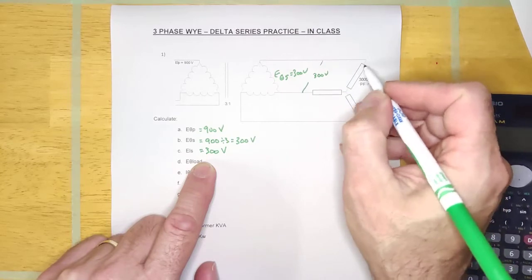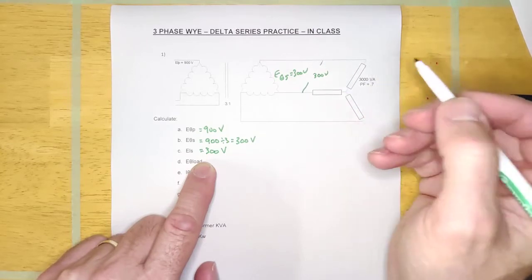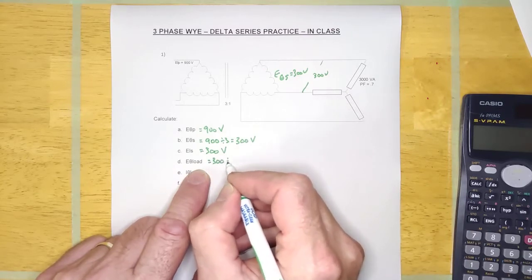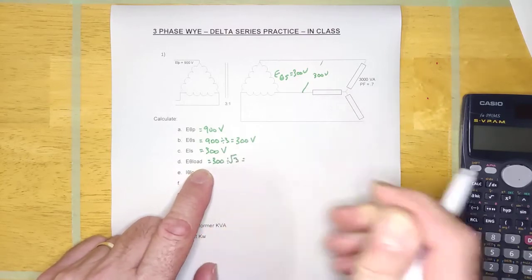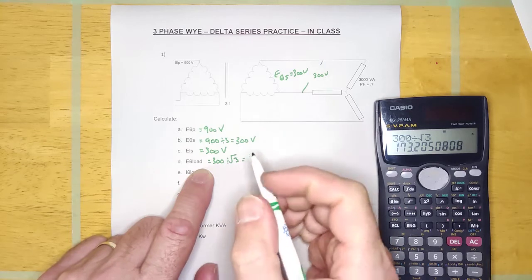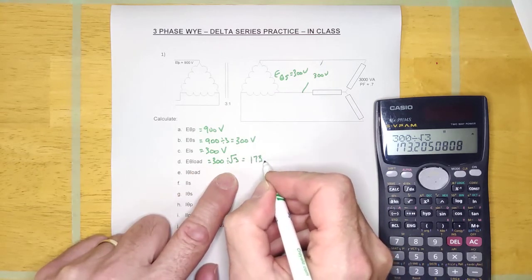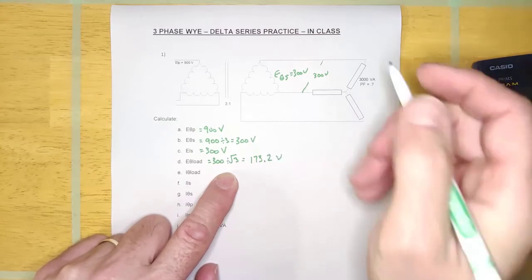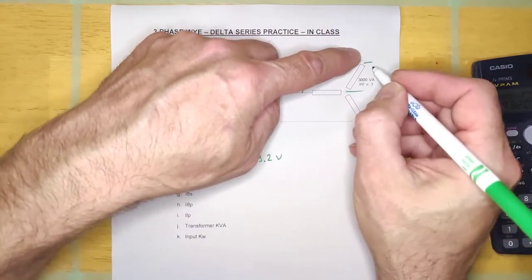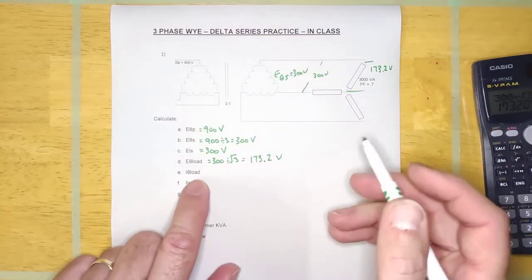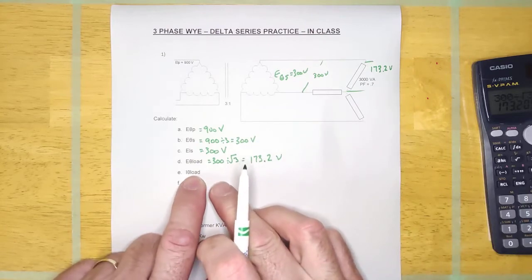Since the load is Y-connected, the question is: what is the voltage across one of these loads? It's going to split that 300 volts, so E-phase load equals 300 divided by root 3, which calculates to 173.2 volts. That's E-phase load — 173.2 volts.